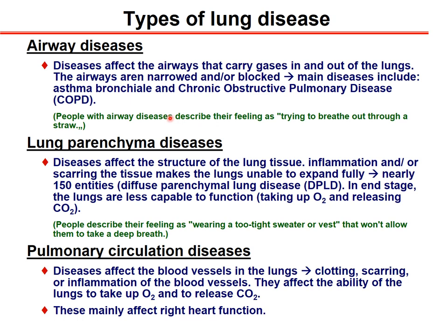Lung parenchymal disease affects the structure of the lung tissue. Inflammation and scarring make the lung unable to expand fully. There are nearly 150 entities of diffuse parenchymal lung diseases. In end stage, the lungs are less capable of taking up oxygen and removing carbon dioxide. People describe their feeling as wearing a tight sweater or vest that won't allow them to take a deep breath.